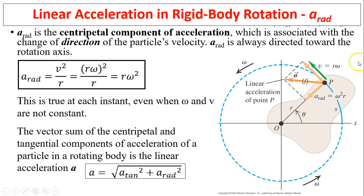Now let's talk about the other component. The other component is the radial component. This is the radial component. We call it centripetal acceleration because it's always pointing toward the center. It tells us how fast direction is changing. We know centripetal acceleration equals v squared over R. v equals R omega. We open this up. It equals R squared times omega squared divided by R. So a_rad equals R times omega squared. This is true at each instant, even when omega and v are not constant.